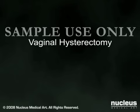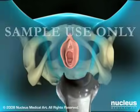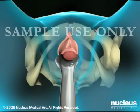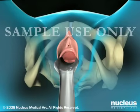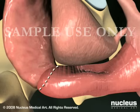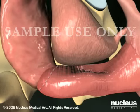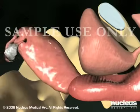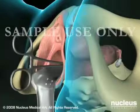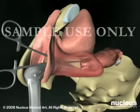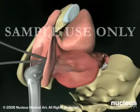For a vaginal hysterectomy, a weighted speculum is inserted into your vagina to stretch it and hold it open. Your surgeon will make an internal incision around the cervix, cut the ligaments and tissues holding the uterus in place, and slide the uterus out through the vagina.